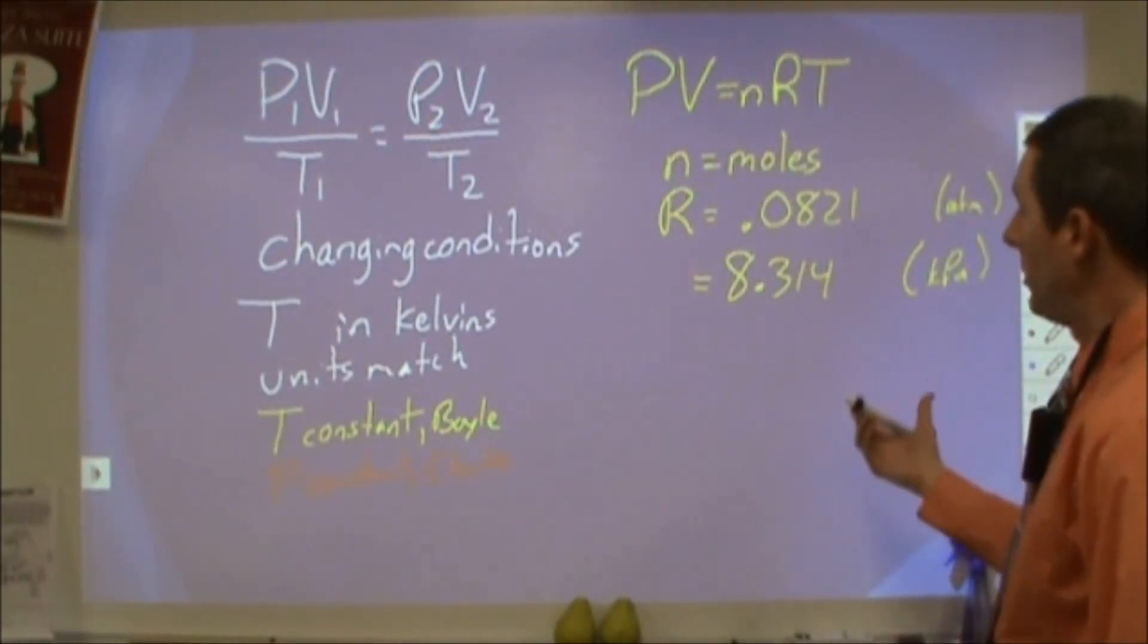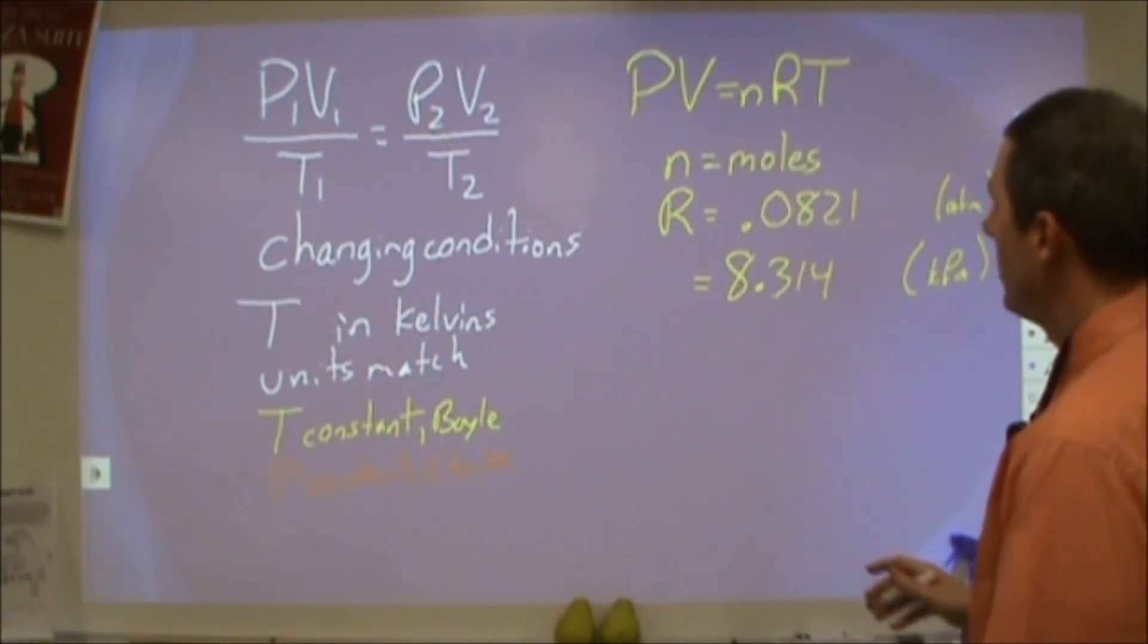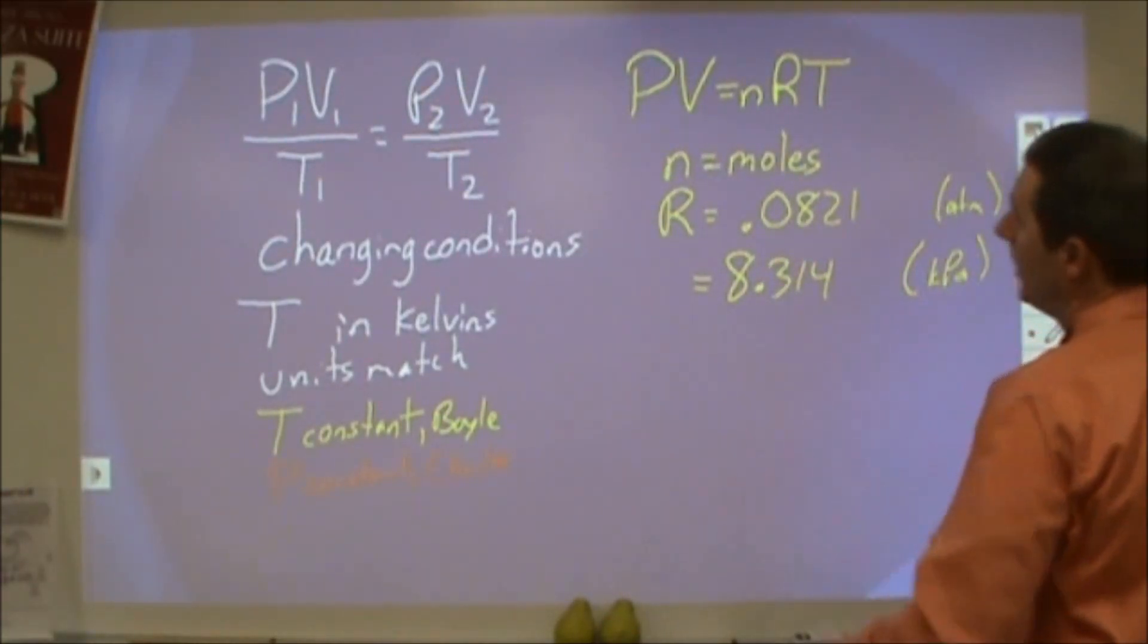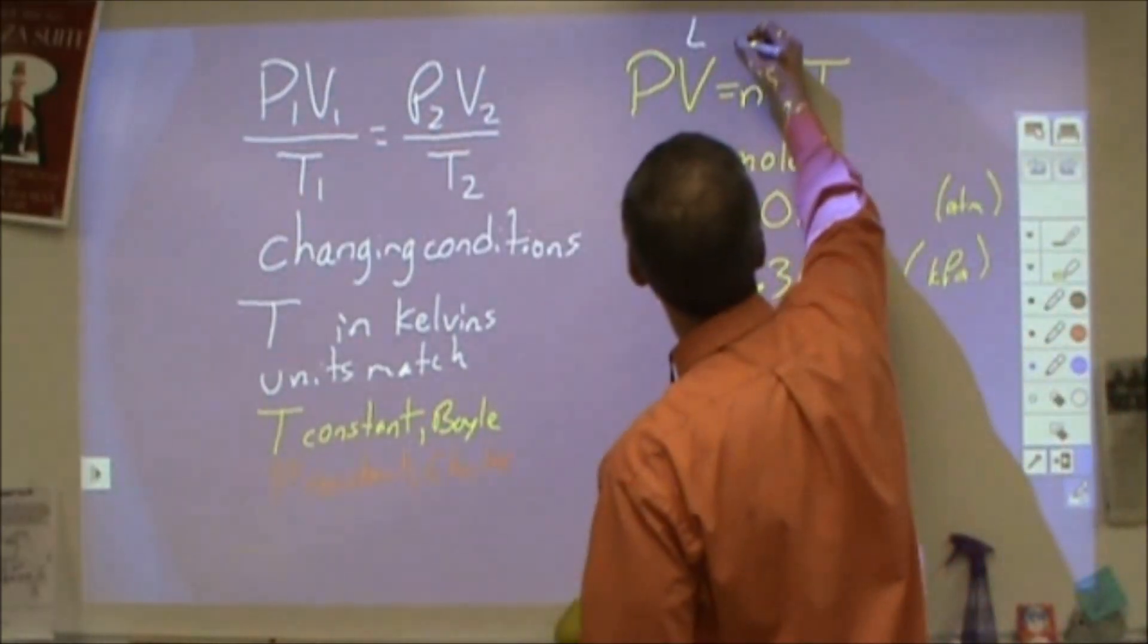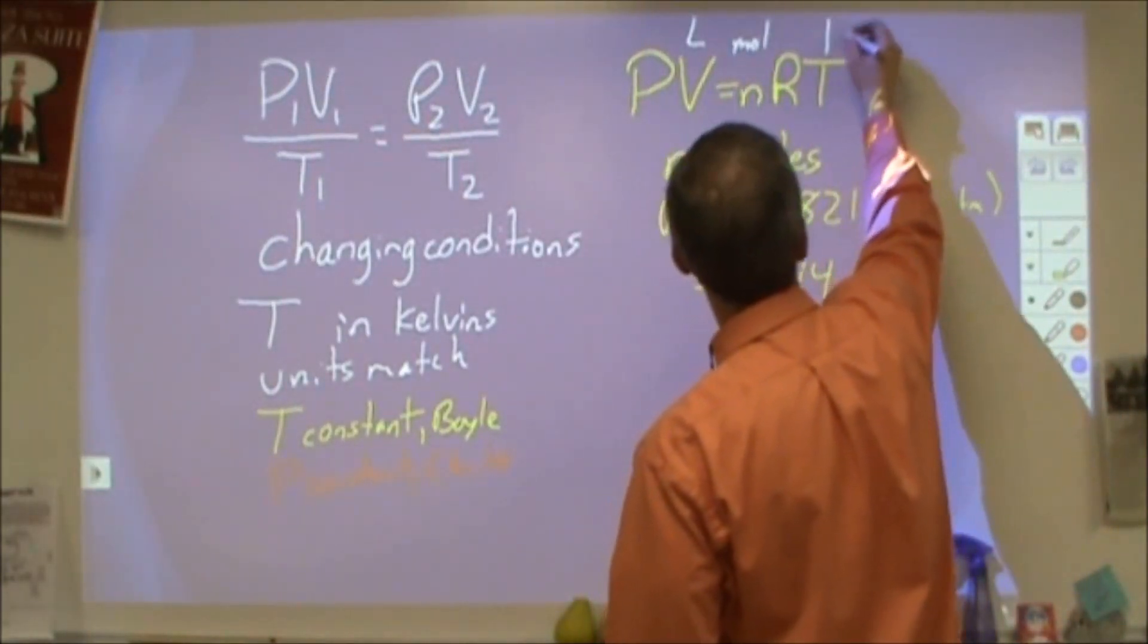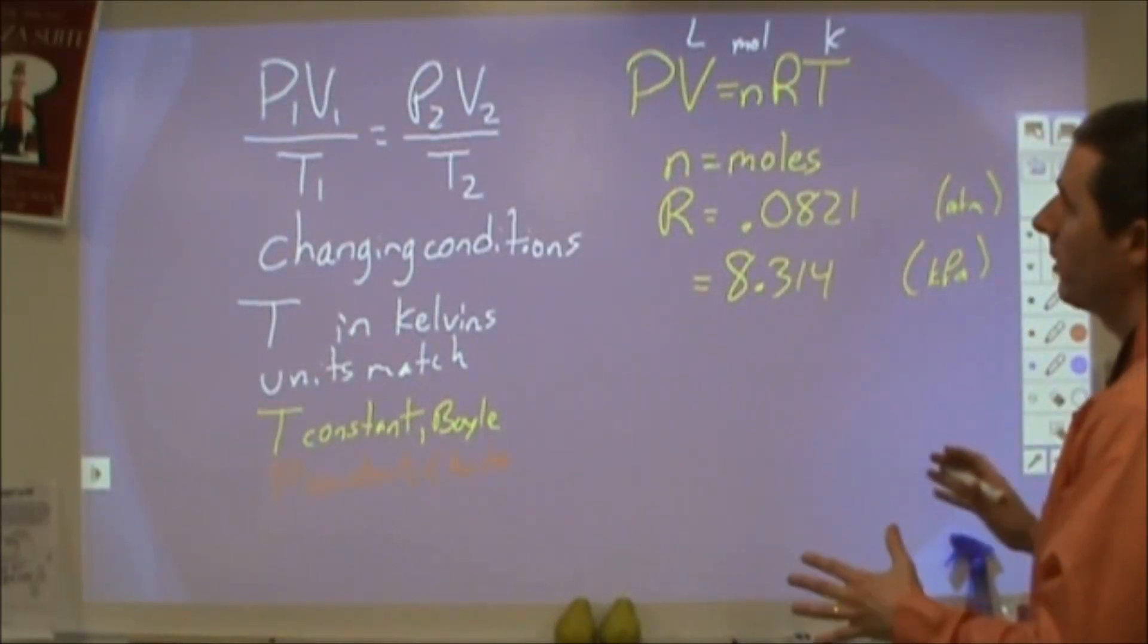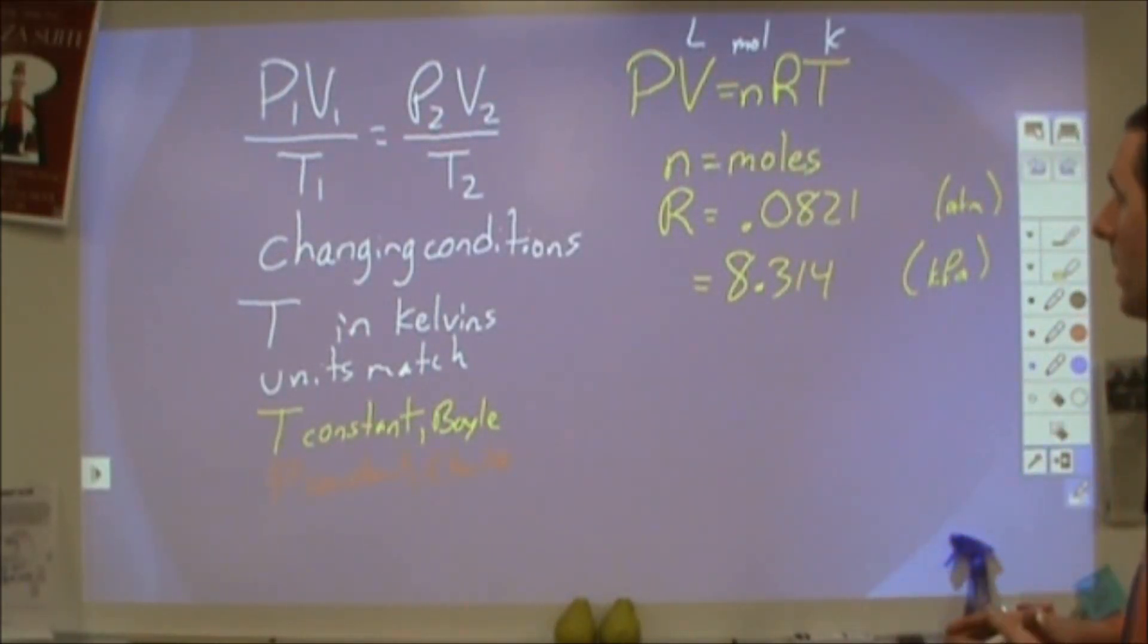So PV equals NRT, on the other hand, is just a singular equation you're plugging in. You're going to have to choose which R value to use based on your pressure unit. Your volume must be in liters, moles has to be in moles, and of course your temperature has to be in kelvins. It is consistent that no matter what calculation you're doing, your temperature does need to be in kelvins.